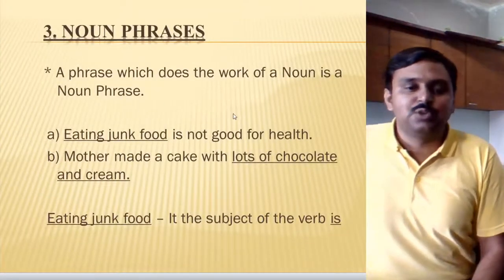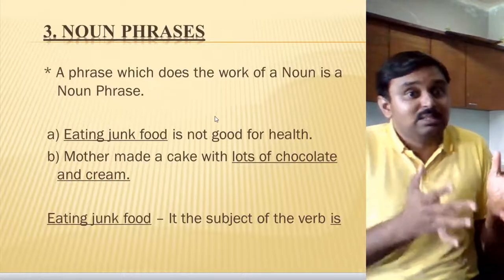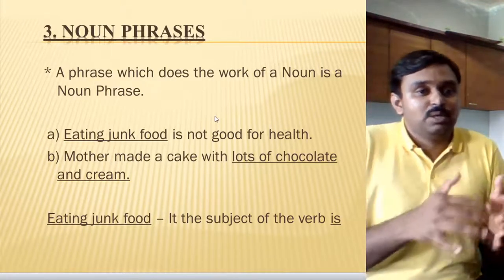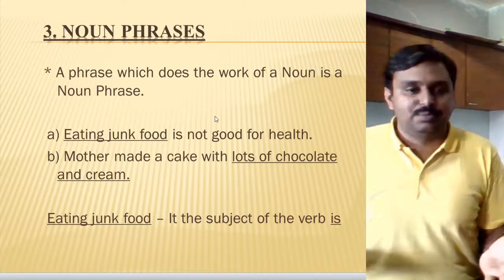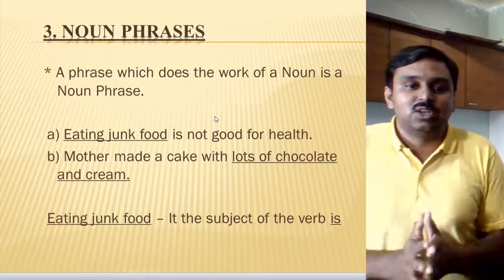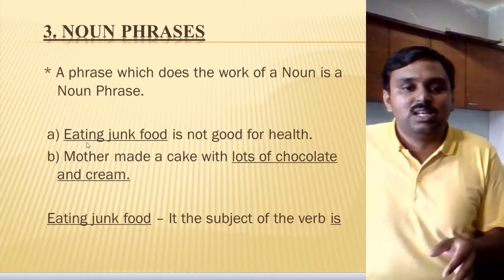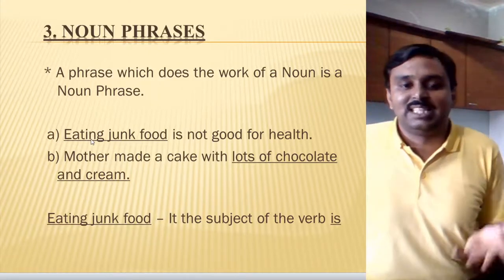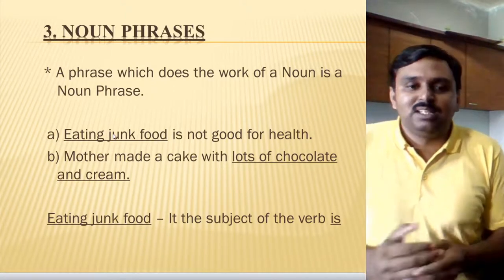Noun phrase is another type of phrase. The adjective phrase describes the noun; the adverb phrase describes the verb. But the noun phrase is not describing any phrase — it is just carrying the noun itself. A phrase which does the work of a noun or which has a noun is called a noun phrase. For example: 'Eating junk food is not good for health.' Here 'eating junk food' is working as a gerund or noun — it is the subject of the sentence, and for that purpose it becomes a noun phrase.